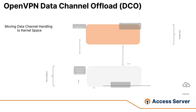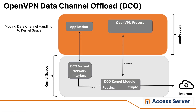The implementation of OpenVPN data channel offload, or OpenVPN DCO, has resulted in a Linux kernel module responsible for managing the OpenVPN data channel. This is a virtual device driver in the Linux kernel that implements the OpenVPN data channel. As a result of this implementation, the need for OpenVPN to transmit data traffic between user and kernel space for routing and encryption or decryption has been eliminated. Now all operations involving payload happen within the kernel space, enhancing performance.